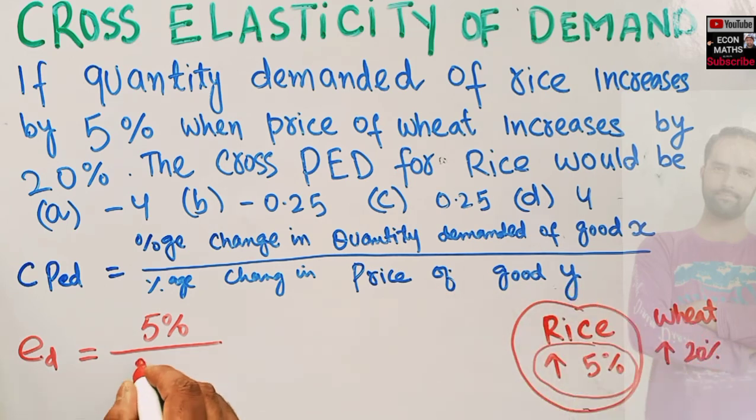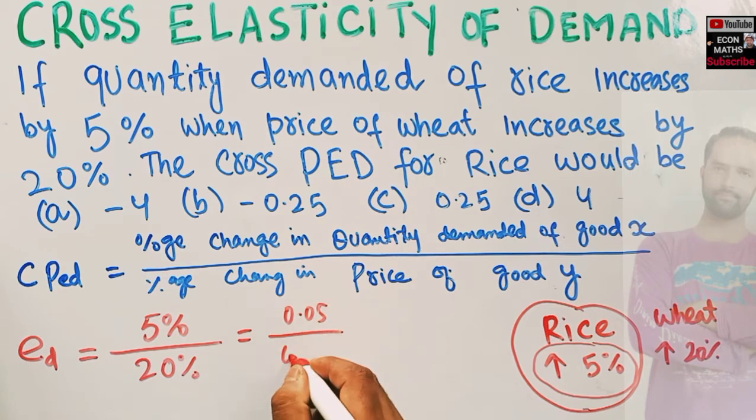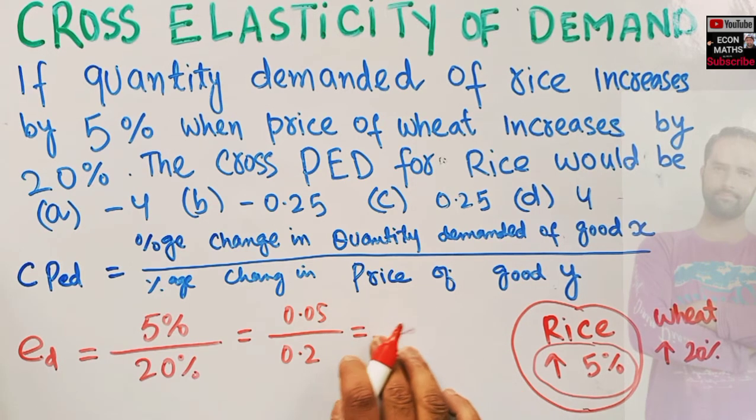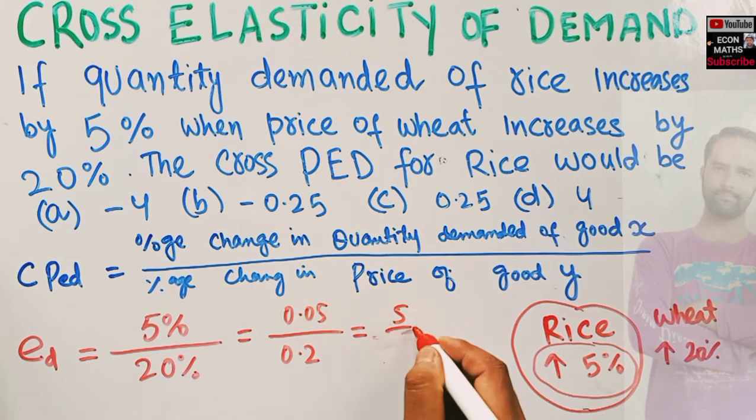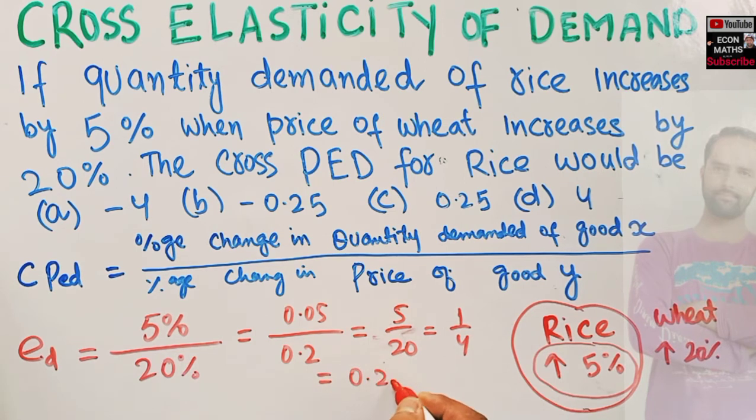That's 20%. So we can write it as 0.05 divided by 0.2. Solving this, it becomes 5/20, which equals 1/4, which comes out to be 0.25. So our cross price elasticity of demand for rice is 0.25.